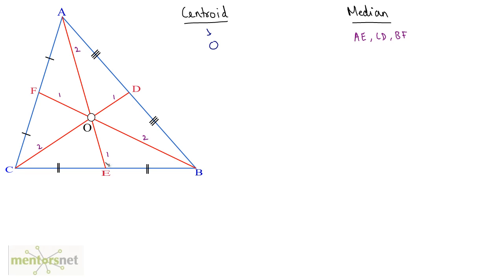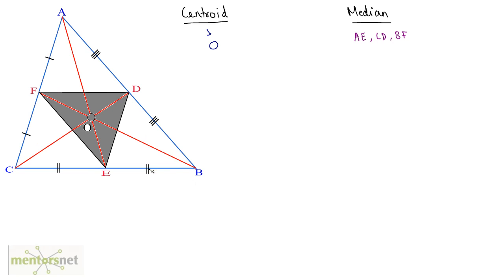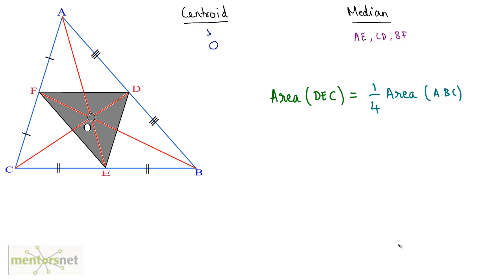D, E and F are the three midpoints of the sides of triangle ABC. If you join these points, they form a triangle DEF. The area of triangle DEF, formed by joining the midpoints of the sides of triangle ABC, is equal to one-fourth of the area of triangle ABC. This is a very important property.